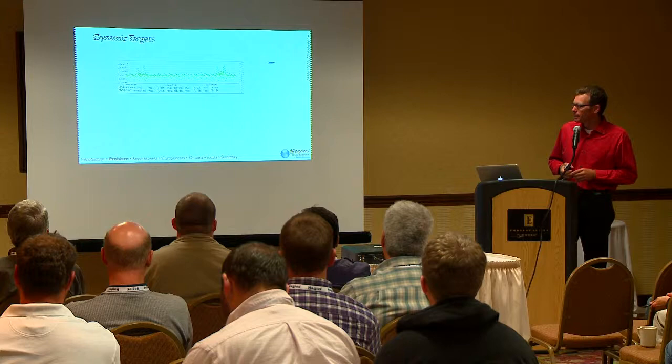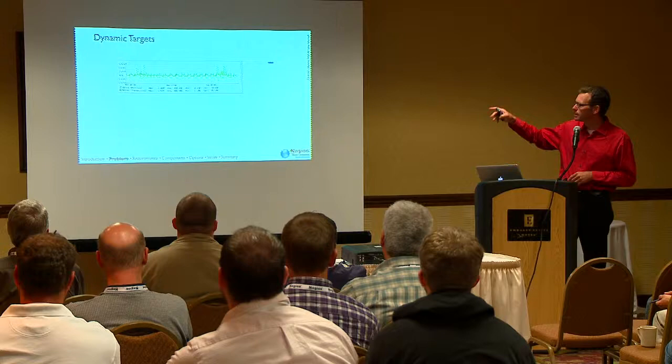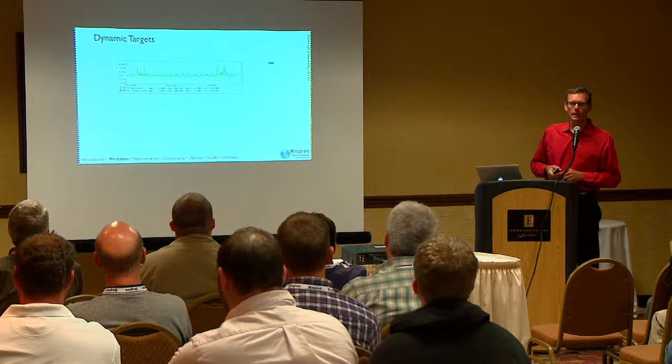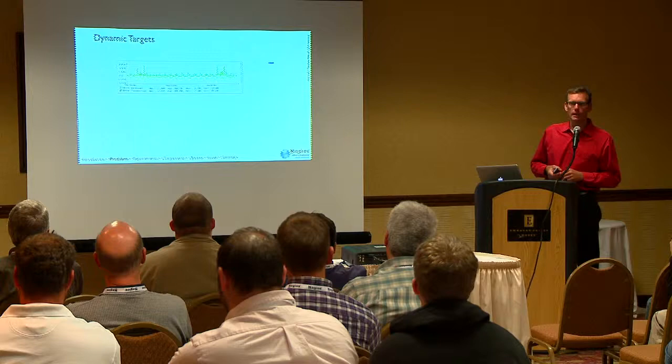Another example involves more dynamic environments. This is a network throughput graph for a data server — basically a file server on the network. This is from a client that runs a lot of distributed continuous build systems using Hudson, with between 30 and 50 virtual machines.